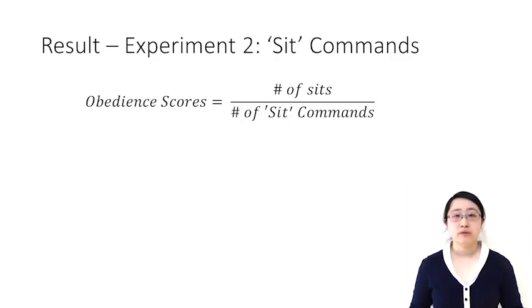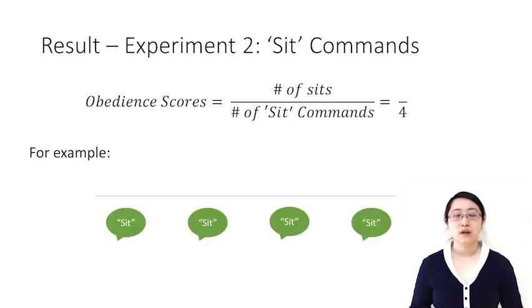In experiment 2, the robot given sit commands, we used the obedience scores to evaluate the dog's performances. The obedience score is the number of the dogs sit over the total number of the sit commands given.